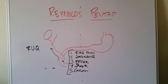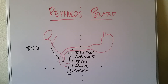Cholangitis just refers to inflammation of the bile duct. 'Cholang-' as in cholangiocarcinoma would be a carcinoma of the bile duct, and a cholangiogram would be visualizing that bile duct. So cholangitis is inflammation — '-itis' meaning inflammation — of the bile duct. That's Reynolds Pentad.